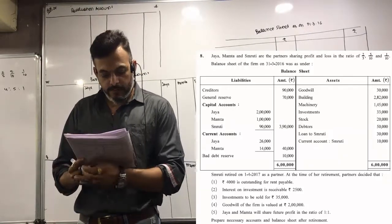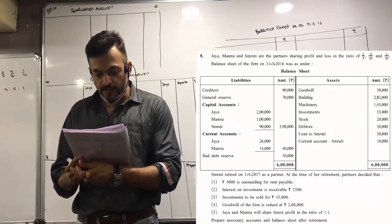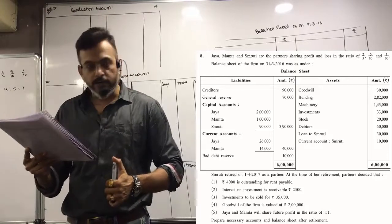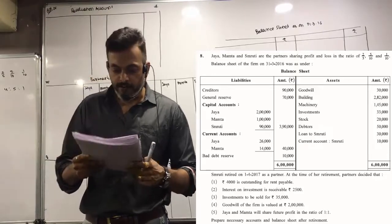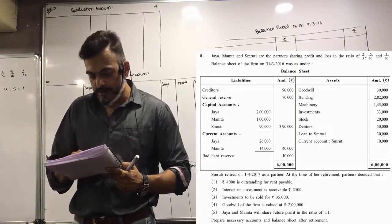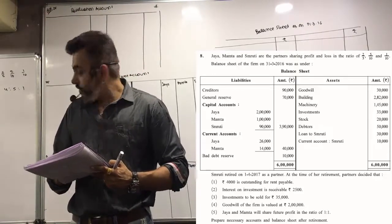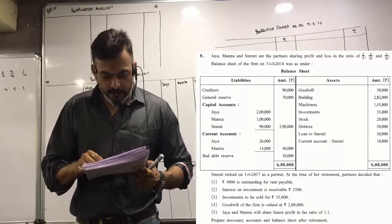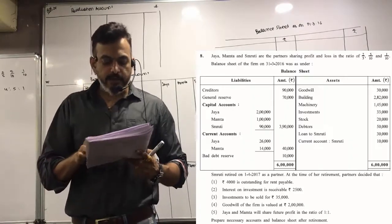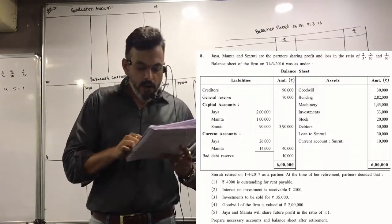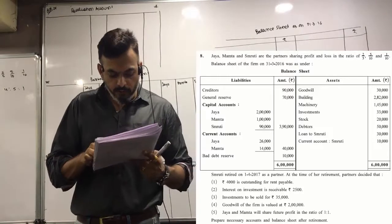Balance sheet items include: creditors, general reserve, capital accounts, current accounts, bad debt reserve on the liabilities side; and goodwill, building, machinery, investments, stock, debtors, and loan to Smriti on the assets side.